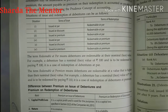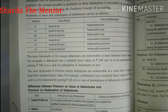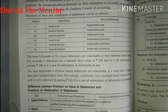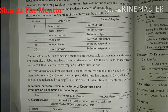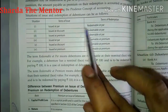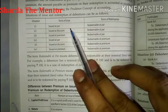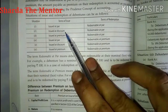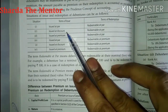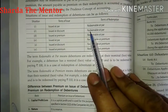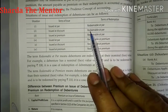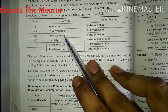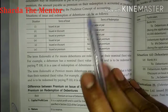Hello everyone. Here you can see on your screen that six conditions are given. If a company issues debentures on different conditions, we will first see three conditions: issue at par and redeem at par, issue at discount — meaning issued at 95 but redeemed at 100 — and issue at premium, meaning issued at 105 but redeemed at 100.